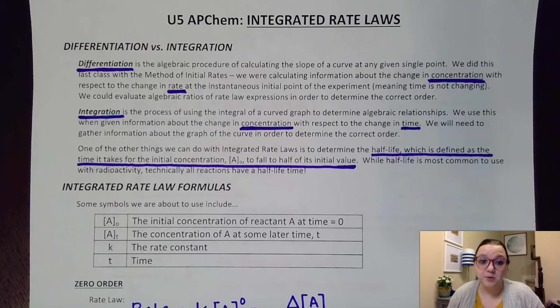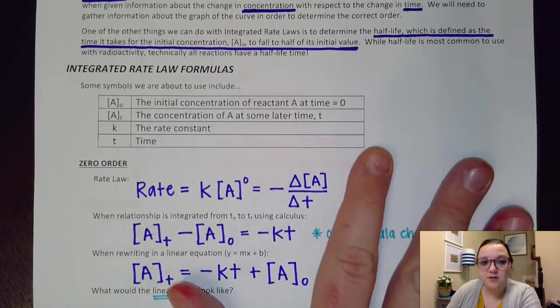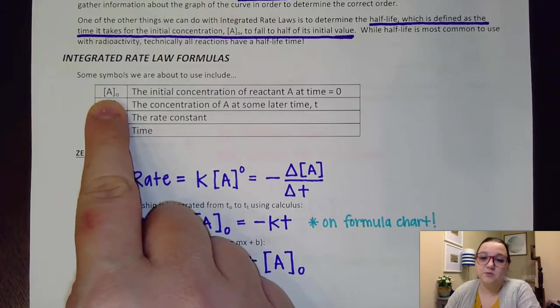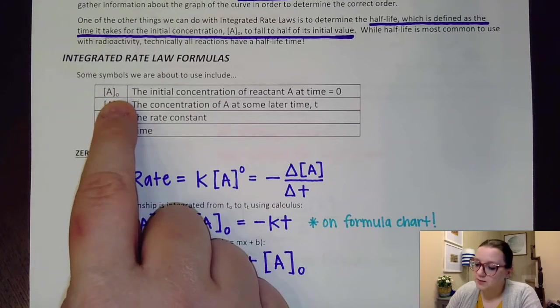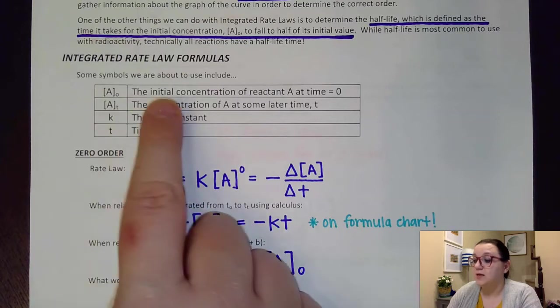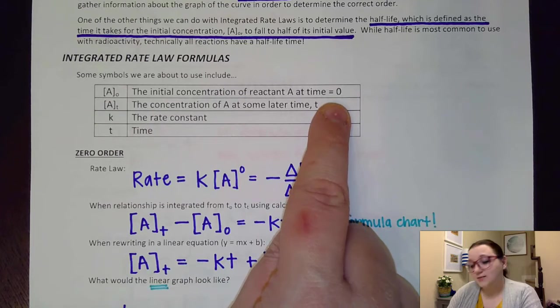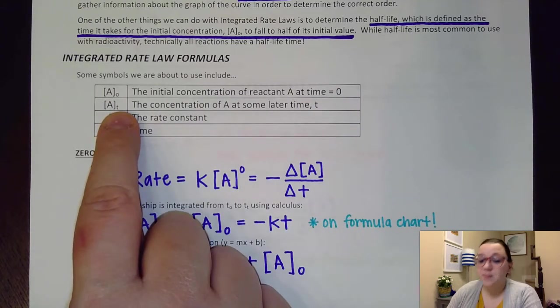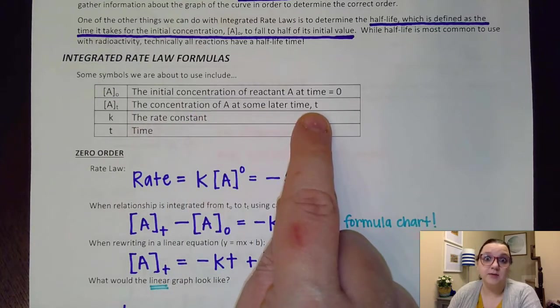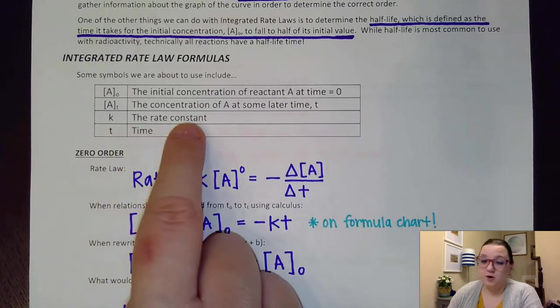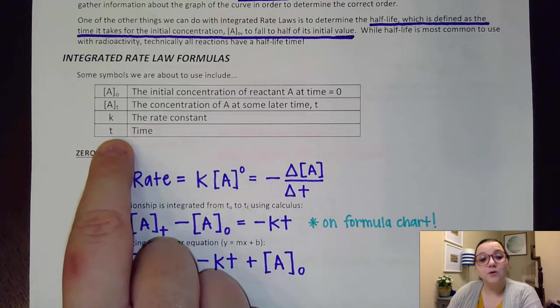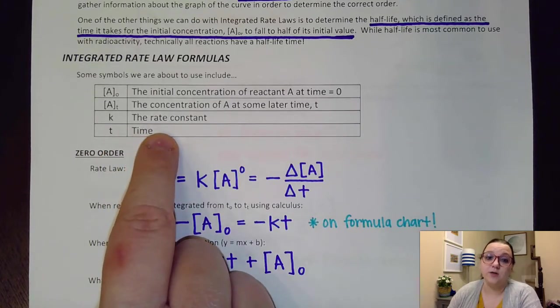There's a few symbols that we want to be familiar with in order to understand the formulas we're about to discuss. First off, we see here our brackets being used again, which of course tells us concentration or molarity. But we notice here that we have a little subscript of zero, and that represents the initial concentration when our time equals zero. If that subscript is replaced with a T, then that would be the concentration at some later time T that we could select. K is again our rate constant, and now we're going to see T or time being used in these equations as well.